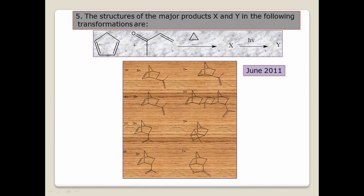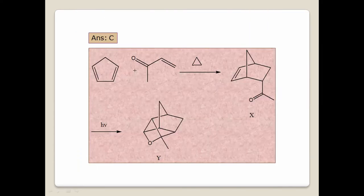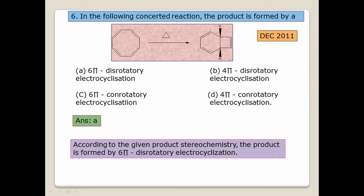Next question: the structure of major products X and Y. You see a 1,3-butadiene system — a diene — and a dienophile attached to an unsaturated group with a drawing group. According to the Diels-Alder endo rule, endo is the major product, so exo is easily eliminated. The remaining possible answers are C and D. A [4+2] cycloaddition is taking place, so the answer is C.